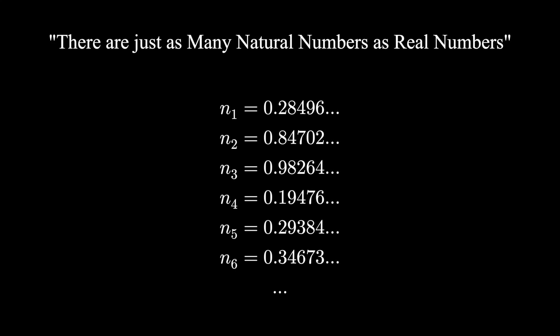Let me create a list matching the numbers one, two, three, and so on out to infinity with every single number between zero and one. Here's my list. Except I'm going to create a new number with the first decimal of the first number, the second decimal of the second number, the third decimal of the third number, and so on forever.